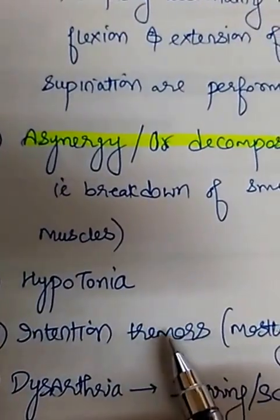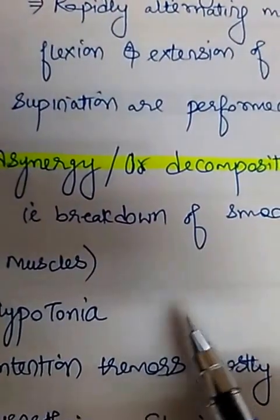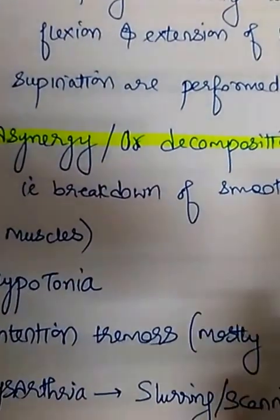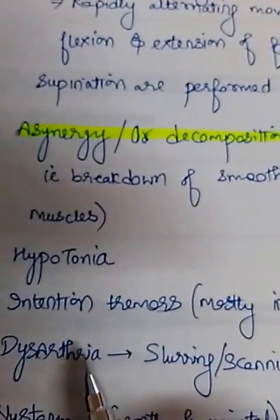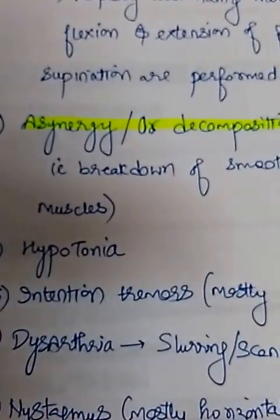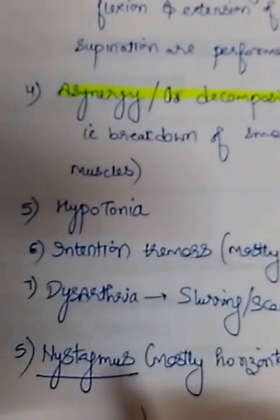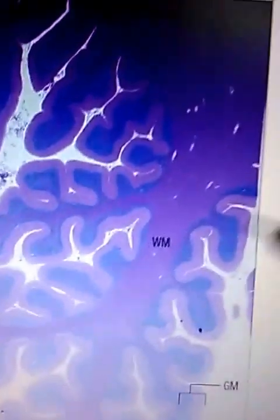Intention tremors are present — whenever the patient does something, tremors occur. In contrast, resting tremors occur in Parkinsonism, but intention tremors occur in cerebellar lesions, especially in demyelinating disorders of the cerebellar peduncles. Apart from this, the patient has slurring or scanning speech called dysarthria. Nystagmus can also occur, which is mostly horizontal and mainly occurs when the vermis of the cerebellum is involved. These are all the features of a cerebellar lesion.